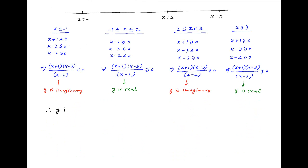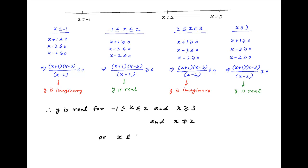To summarize, y is real when x is greater than or equal to -1 and less than or equal to 2, and when x is greater than or equal to 3. Also, recall that x should not be equal to 2. Therefore, y is real when x belongs to the interval [-1, 2) union [3, infinity).